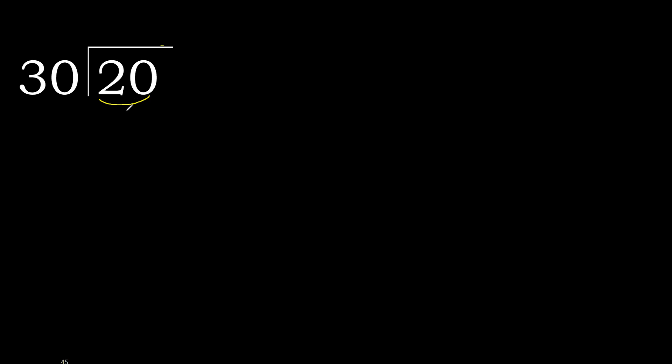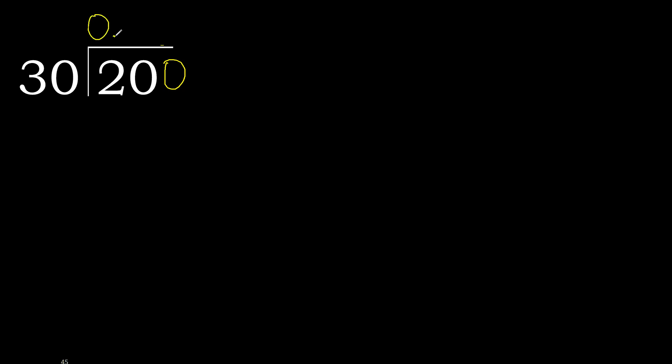20 divided by 30. 2 is less, therefore next. 20 is less, therefore next. There is no number, therefore complete — always complete with 0. Here: 0 point.